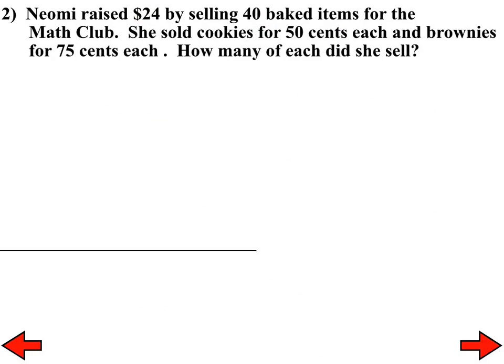Let's go to number 2. Naomi raised $24 by selling 40 baked items for the math club. She sold cookies for $0.50 each and brownies for $0.75 each. How many of each did she sell? Much like in the last one, we're going to have a total equation that keeps track of how many brownies and cookies are sold all together and then a money equation or a cost equation. Here's what I want you to do. I want you to set up your system, and then I want you to stop because I need to make sure everybody has a correct system before we can move on from there. I'm going to give you about 30 seconds to get your system set up.